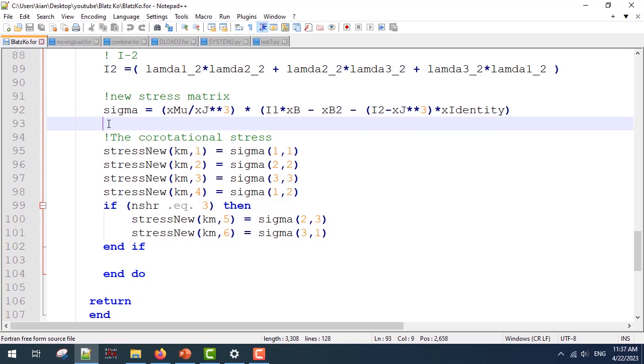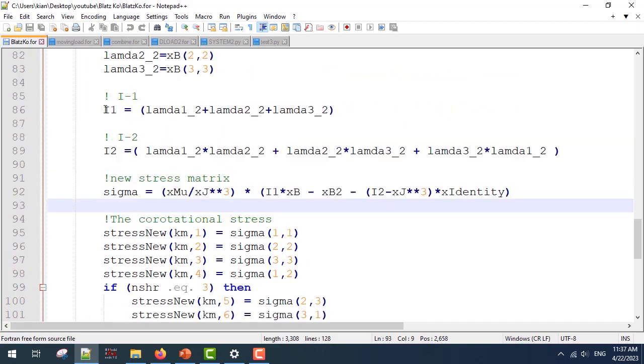We can use this kind of formatting for the uniaxial stress for the Blatz-Ko model. As I said before, this simplified model is only stable for uniaxial stress, and if you have shear loading or shear stresses, you have to write a VUMAT for the original energy function.